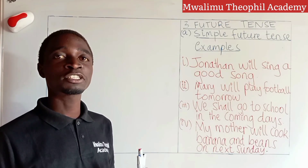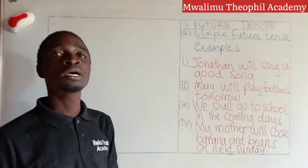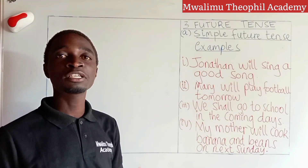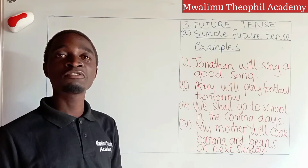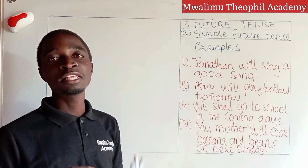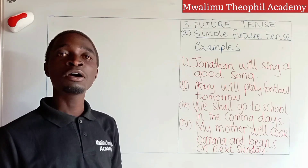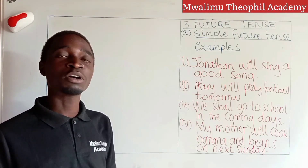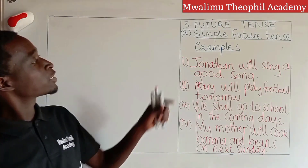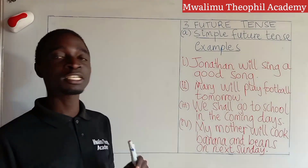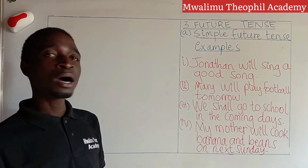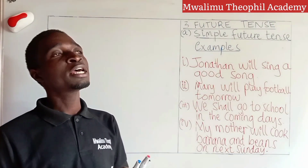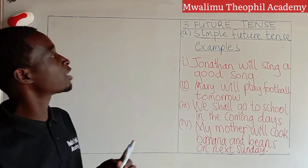We will continue with tenses and deal with the third type: future tense. In future tense, as with the previous two tenses, it is also divided into four categories — simple, continuous, perfect, and perfect continuous. Let us start with the first category of future tense: simple future tense. Any sentence in simple future tense should obey the following rule: start with a subject, then add 'will' or 'shall,' followed by the main verb in its infinitive form.